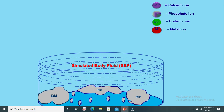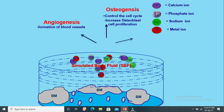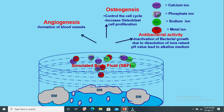In this figure, we immerse the biomaterial in the simulated body fluid (SBF). On exposure to the SBF, ionic exchange occurs, which promotes angiogenesis — the formation of blood vessels — and osteogenesis, that is osteoblast cell proliferation, leading to new bone formation.